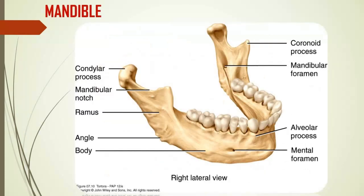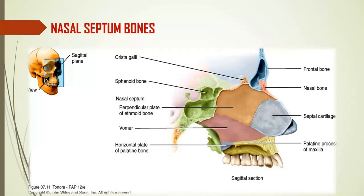The mandible is a very interesting and high-yield bone. It has the coronoid process, the condylar process, the mandibular notch, and the ramus of the mandible. The angle of the mandible is very palpable in living human beings — when you open your mouth, where your jaws are prominent, that's the angle of the mandible. It has the body with the mental foramen where nerves pass through, and the alveolar process of the mandible where your lower teeth lodge in.